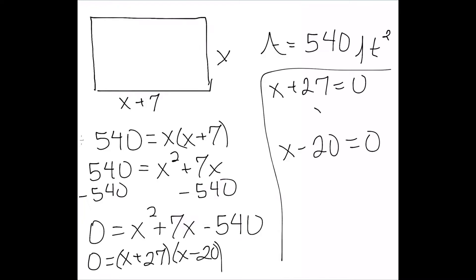If I solve this first one, I get x equal to negative 27. If I solve the second one, x equal to 20. Since we're talking about the length of sides, negative numbers just don't make sense here. So x is 20.